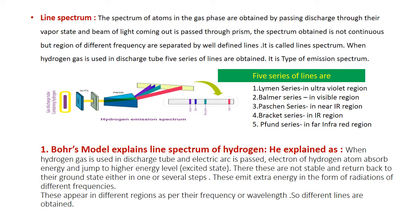Five series of lines are obtained in the case of hydrogen when used in the discharge tube. The first is the Lyman series, observed in the ultraviolet region. Then the Balmer series, which appears in the visible region. Then the Paschen series, Brackett series, and Pfund series — all of these are visible in the infrared region. That is about the line spectrum in brief.